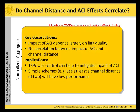The key observations from this experiment are that the impact of ACI largely depends on link quality, and there is no simple correlation between the impact of ACI and the channel distance. The implications are that transmission power control can help to mitigate the impact of ACI, and that simple schemes for channel assignment — for example, using at least a channel distance of 2 — will have low performance in practical scenarios since other factors impact the performance as well.